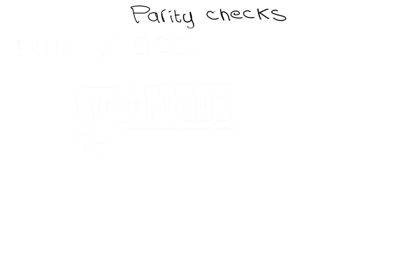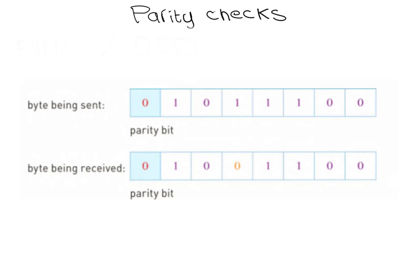If a byte has been transmitted from A to B, and if even parity is used, an error would be flagged if the byte now had an odd number of 1 bits at the receiver's end. For example, assuming even parity is being used, in this case the byte received has 3 1-bits, which means it now has odd parity, while the sender's byte was using even parity with 4 1-bits. This means an error has occurred during the transmission of the byte.